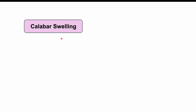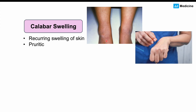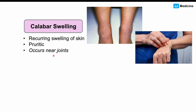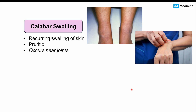If patients do experience symptoms, they can have what we call calabar swelling — a recurring swelling of the skin that occurs, goes away, and then comes back in a different part of the body. This is likely due to an immune response to microfilariae worms or pieces of the adult worm. Along with the swelling, patients will have pruritus or an itching sensation. It's going to be non-painful and occurs mostly near joints, particularly the knees and elbows.